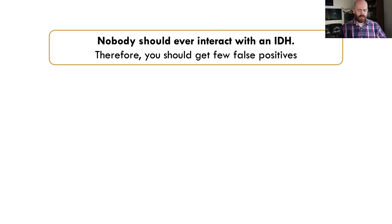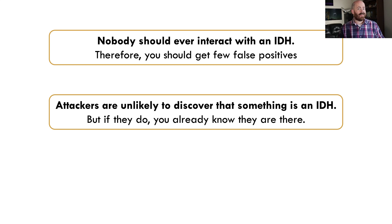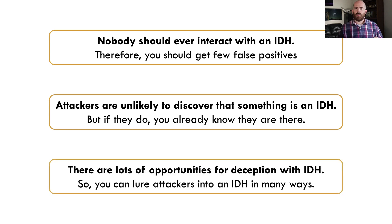A couple of key things that make IDH work: nobody should ever interact with an intrusion detection honeypot — it has no production value. You can allowlist internal scanners and avoid false positives. You should get very few false positives, and if you do, they're very easy to investigate and tune out. Attackers are very unlikely to discover something is an IDH, and even if they do, it doesn't matter much because you already know they're there and can respond quickly. There are also lots of opportunities for deception — you can lure attackers into an IDH in many creative ways.